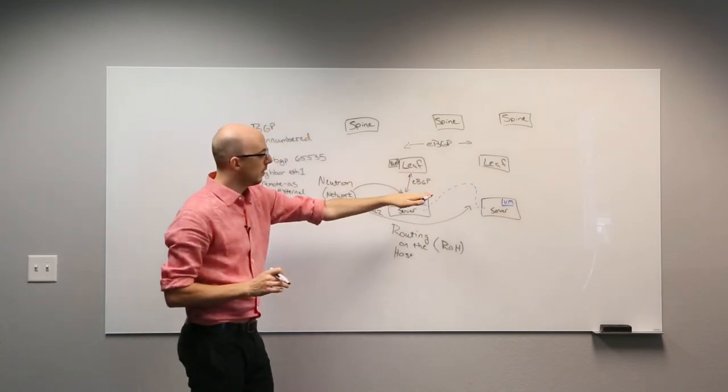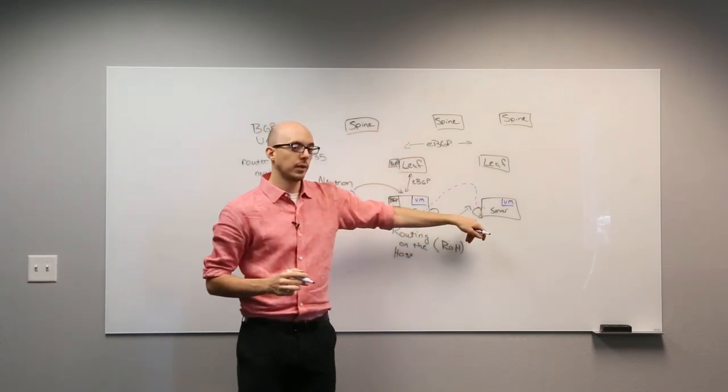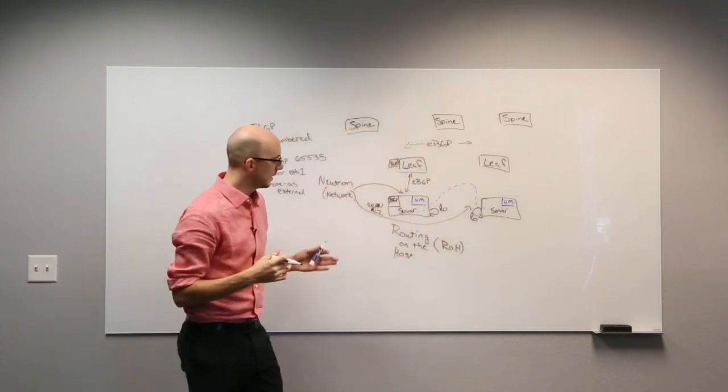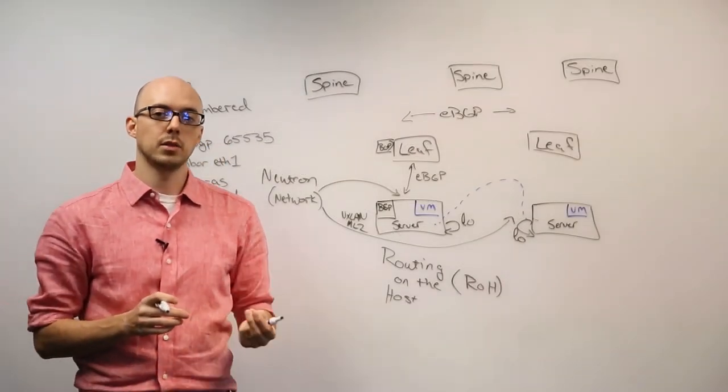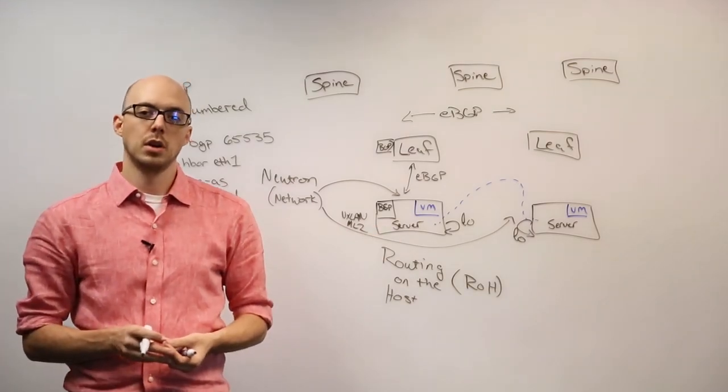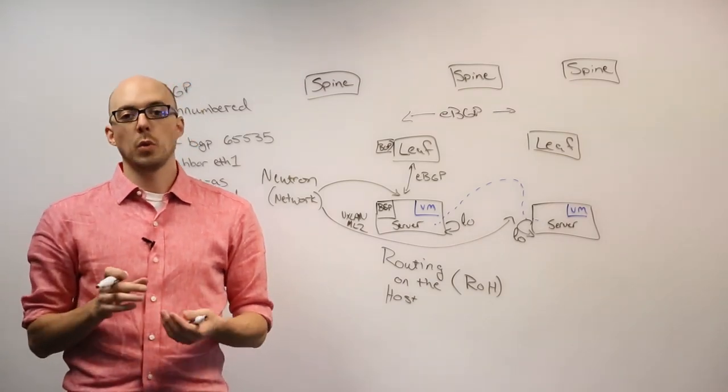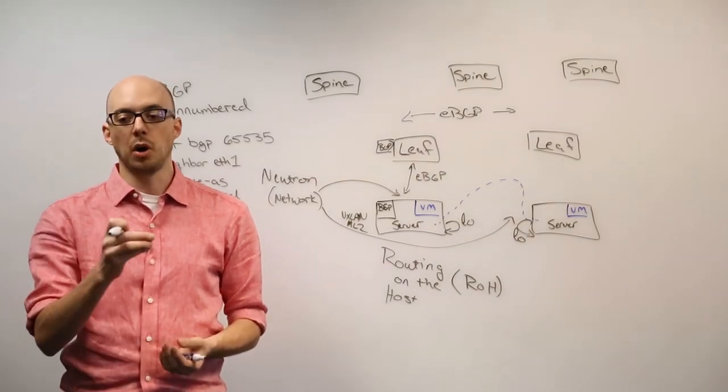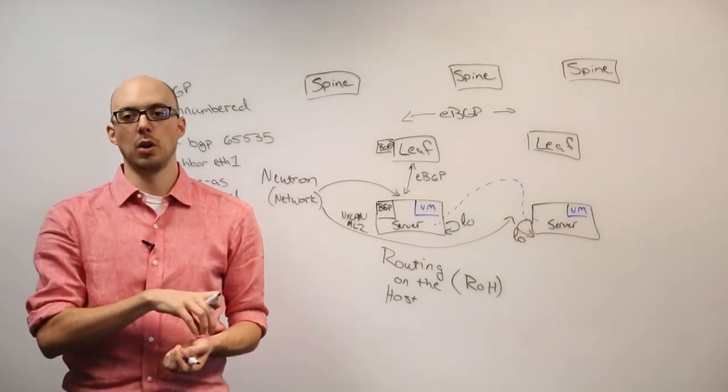Each of these VXLAN tunnels is sourced and terminated on a loopback interface, or the LO interface of each server that's advertised via BGP into the fabric. The most important thing to keep in mind in this solution is the fact that the servers are actually the component in the network doing the VXLAN encapsulation and decapsulation, which oftentimes will require special NICs or smart NICs to offload that capability to the network adapter instead of doing it on the CPU itself.